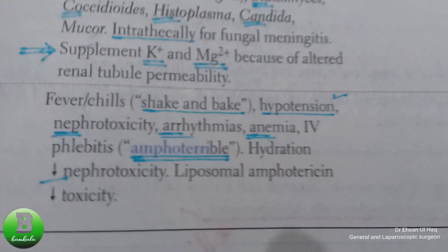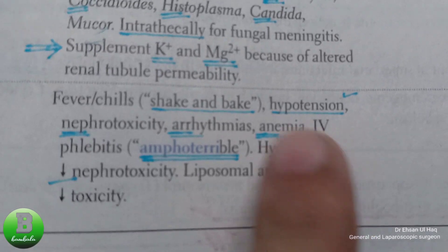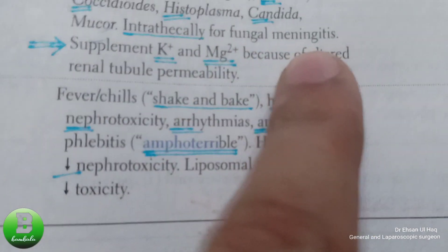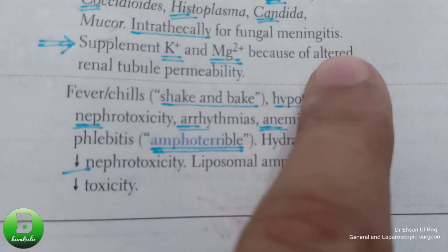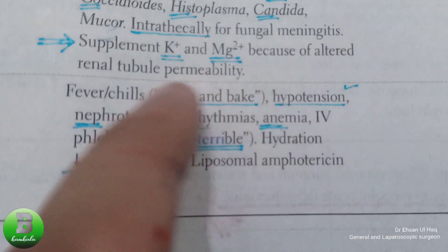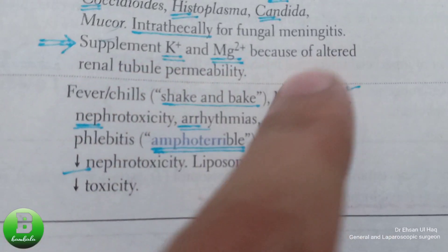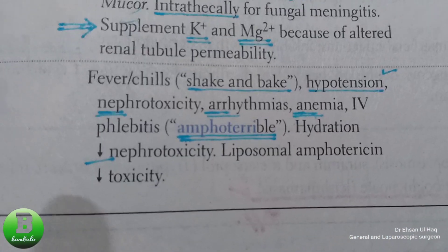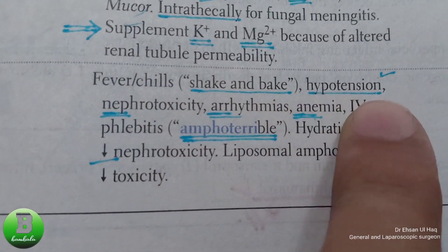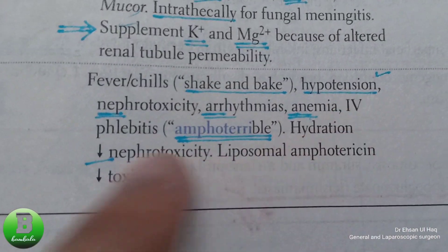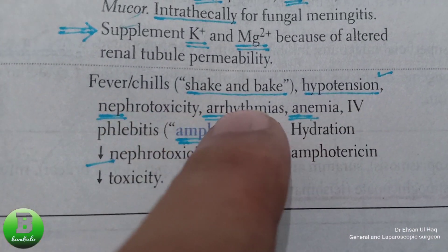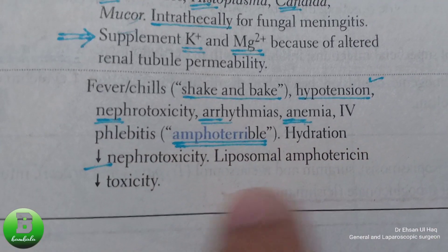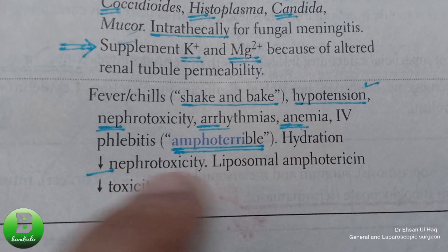Regarding side effects of Amphotericin B: we give potassium and magnesium supplementation because it alters renal tubular permeability. Side effects include hypotension and anemia. Hydration status should be monitored and maintained.